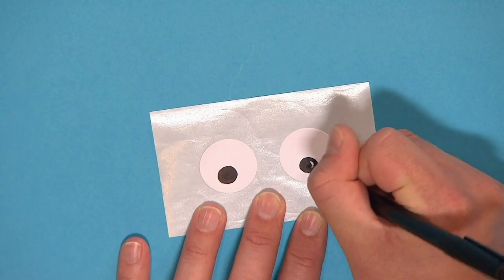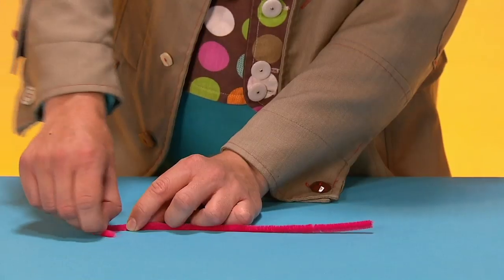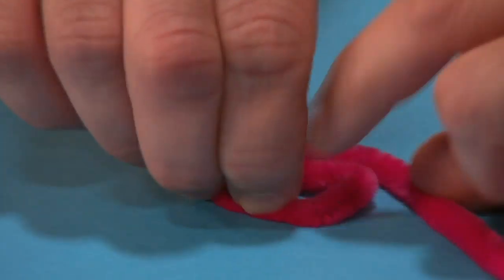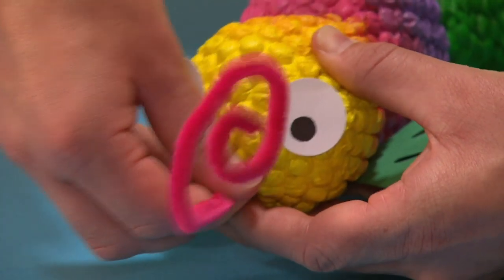Draw black dots on stickers for eyes. And lastly, take the pipe cleaner. Give it a curl at one end and carefully push the other end through the bubble wrap to make a tongue.